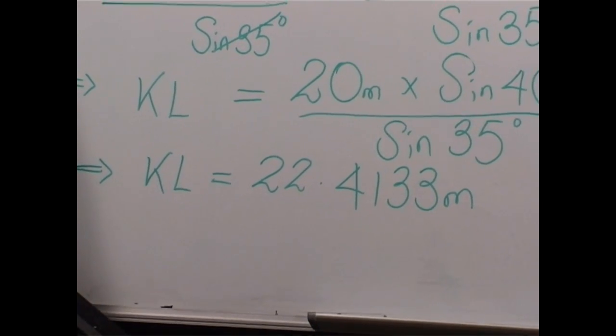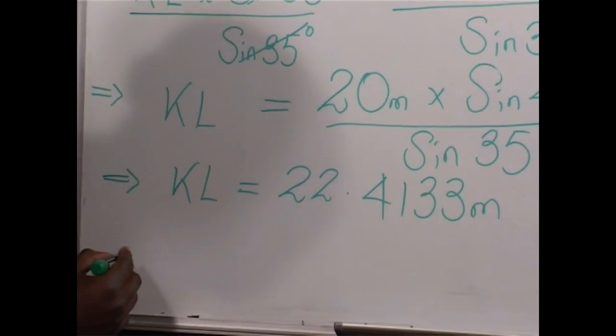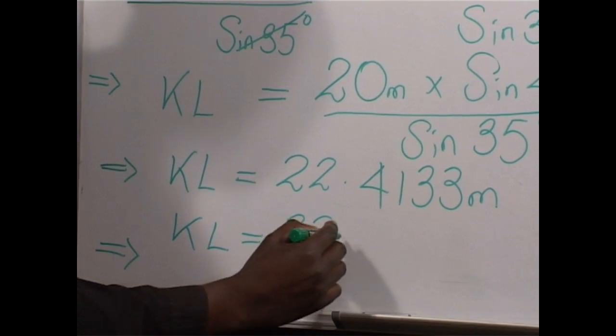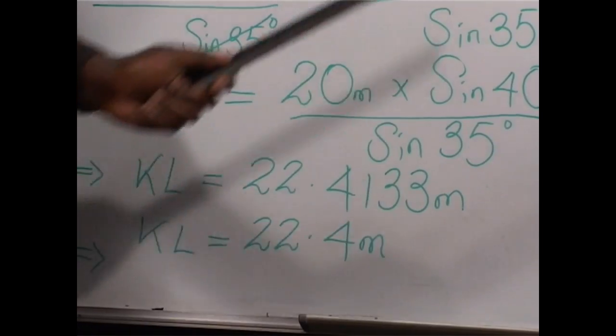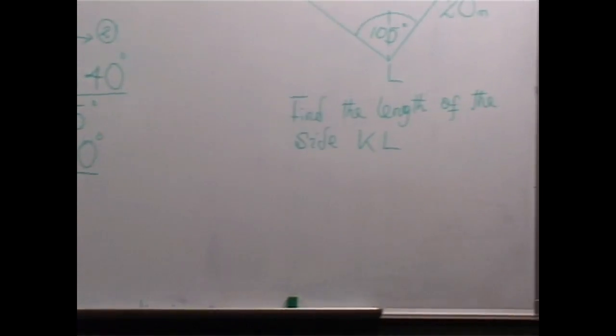Our standard is to express answers correct to 3 significant figures. So when we correct KL to 3 significant figures, KL is equal to 22.4 meters. So we have managed to analyze our triangle KLM and found the length of the side KL. Having done this, we will now move on and look at a general situation from which we will be able to derive the sine rule, so that we can use it to calculate lengths and angles of triangles.